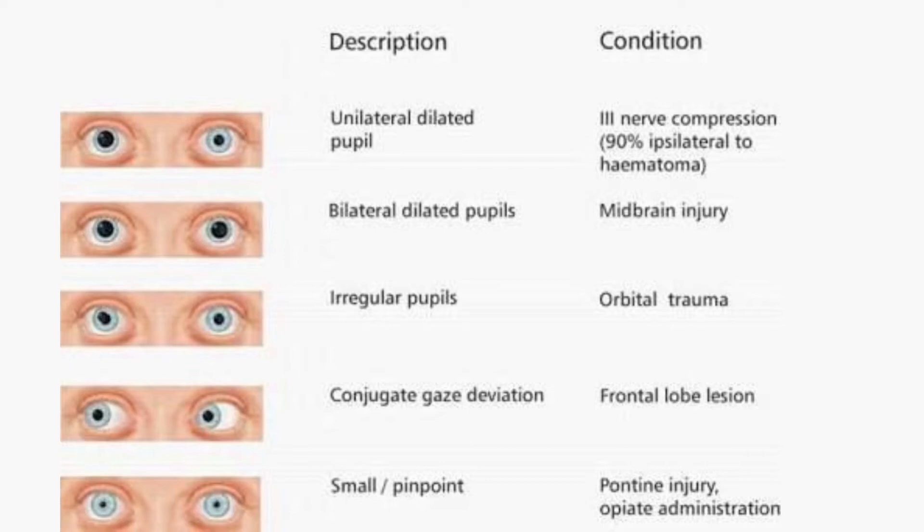Irregular pupils indicates orbital trauma. Whereas conjugate gaze deviation indicates a frontal lobe lesion. Small or pinpoint pupils suggest a pontine injury or opiate administration.